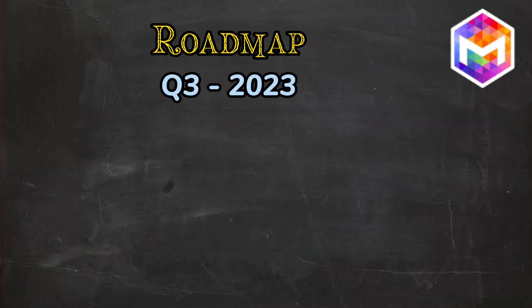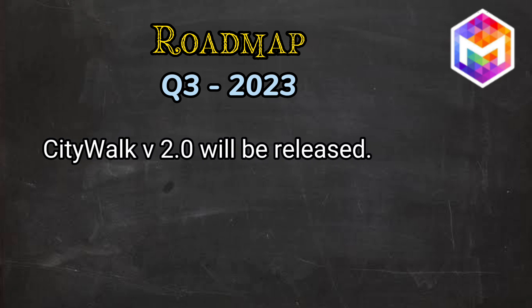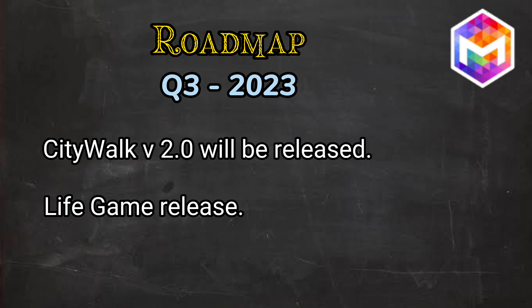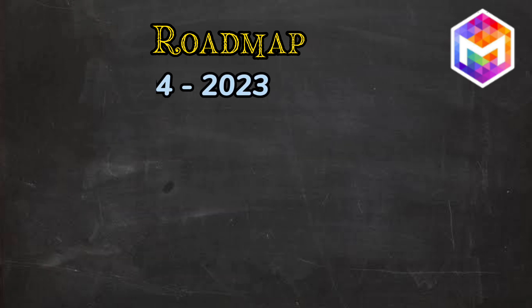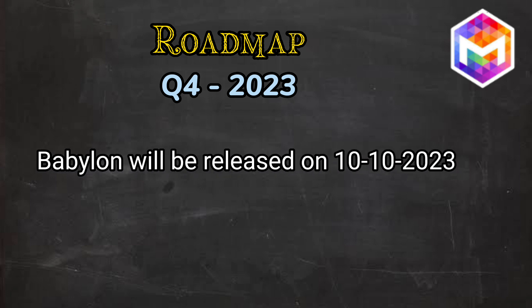In Q3 2023, CityWalk game version 2 will be released, Life Game will be released, and the beta version of Sell Me Time will be released. In Q4 2023, the second chain of Mojak will be released — this will be the first time Mojak's multi-chain testing will occur.